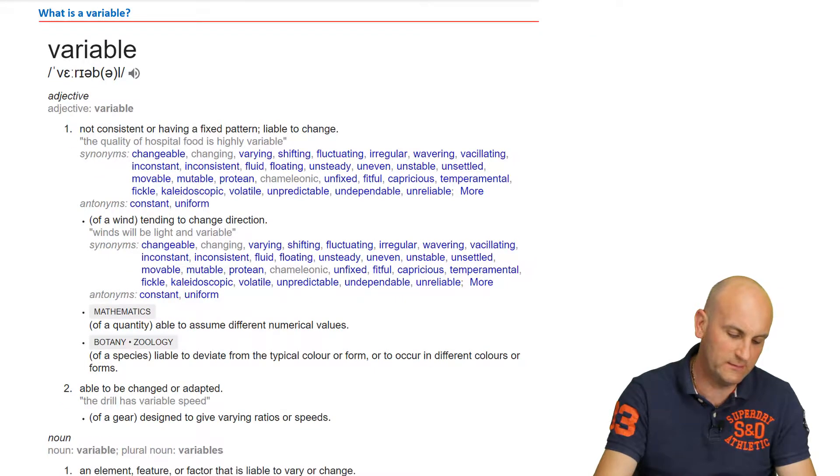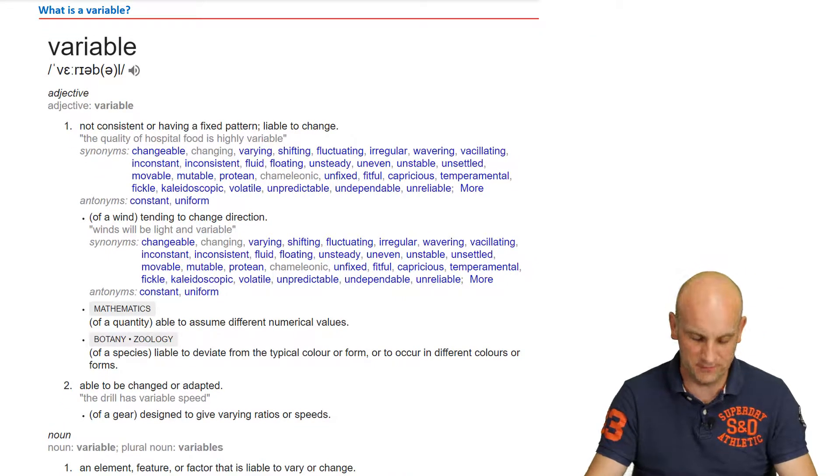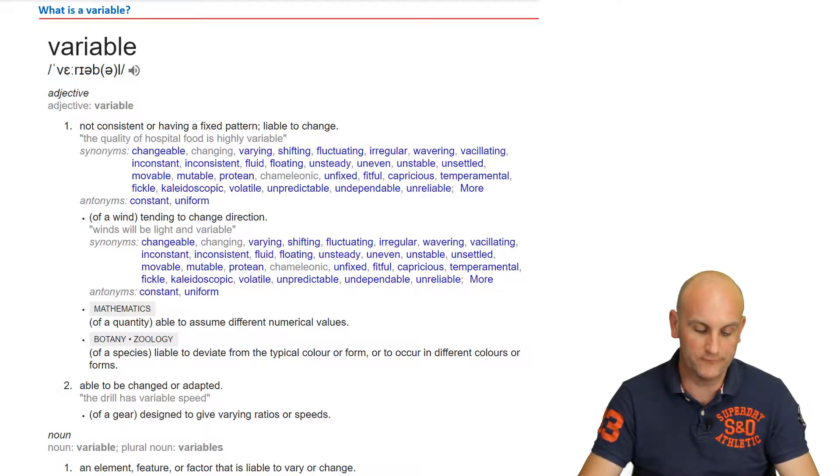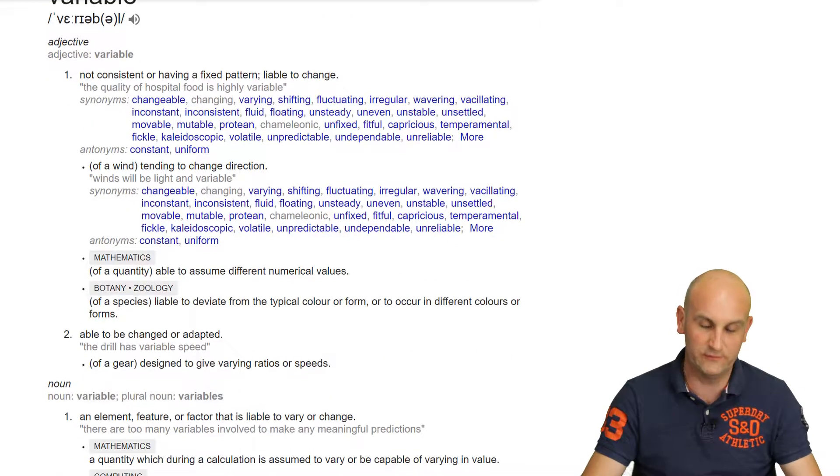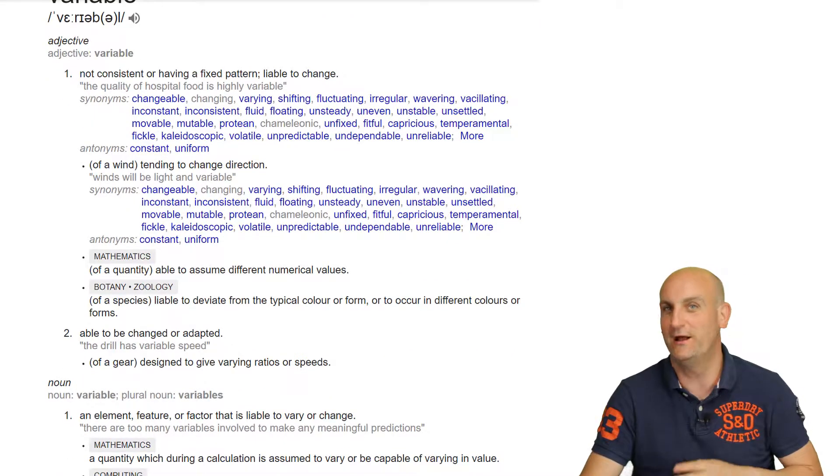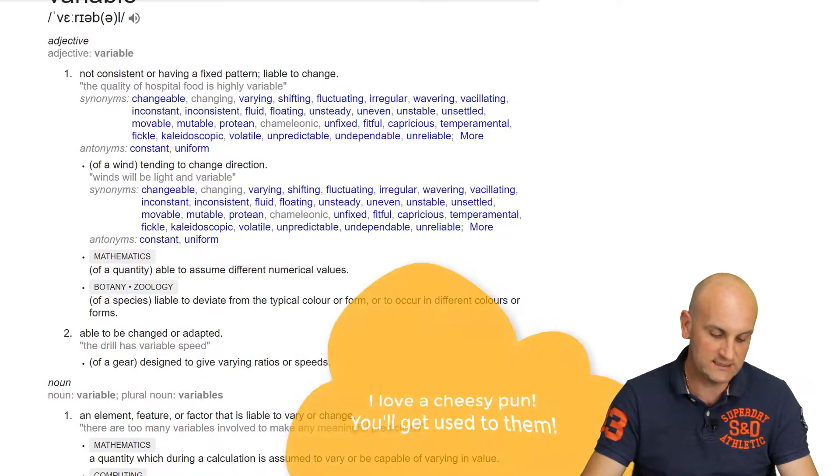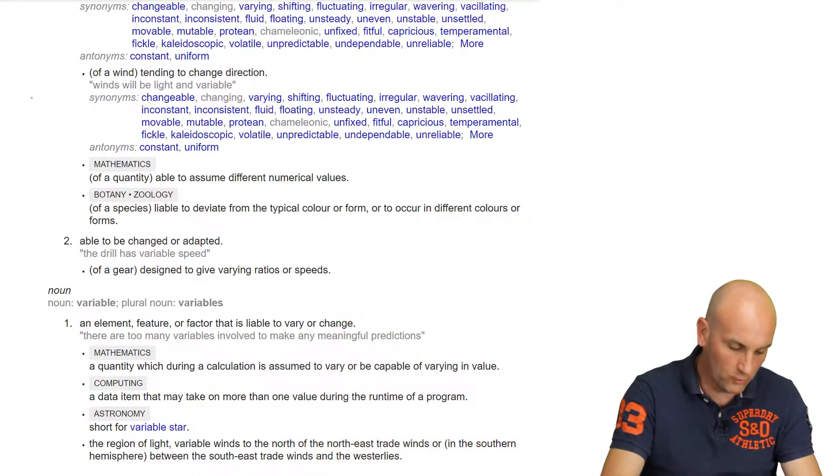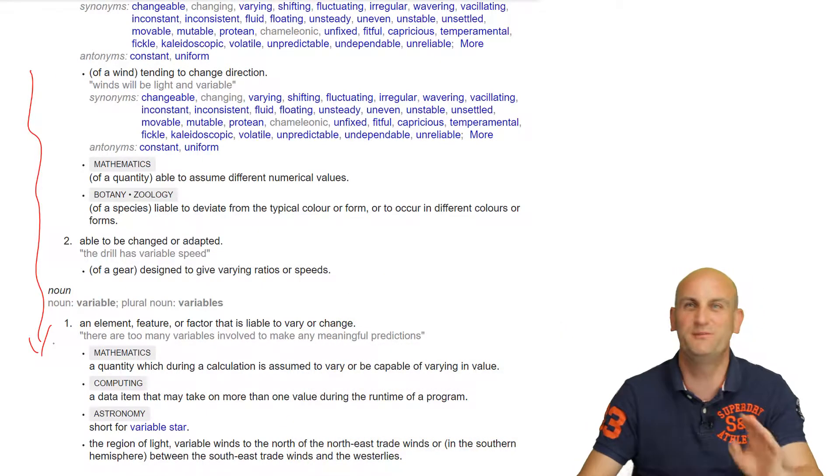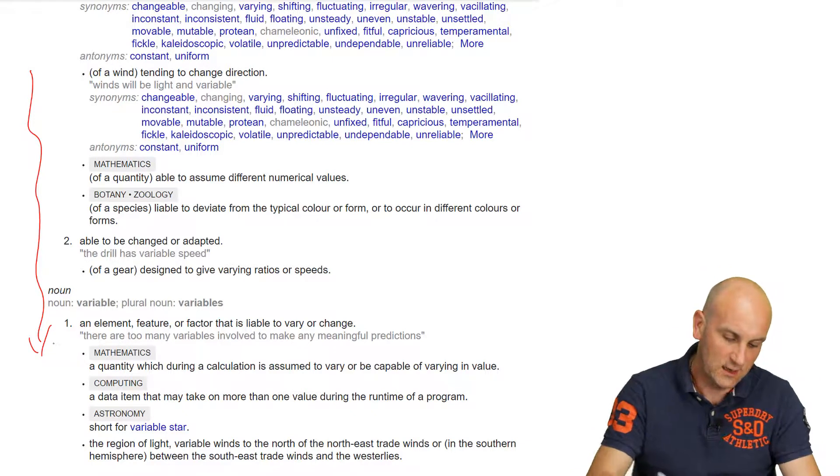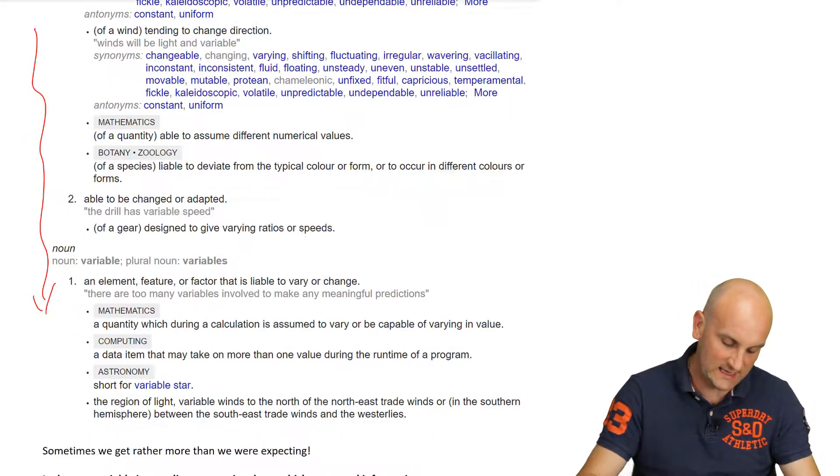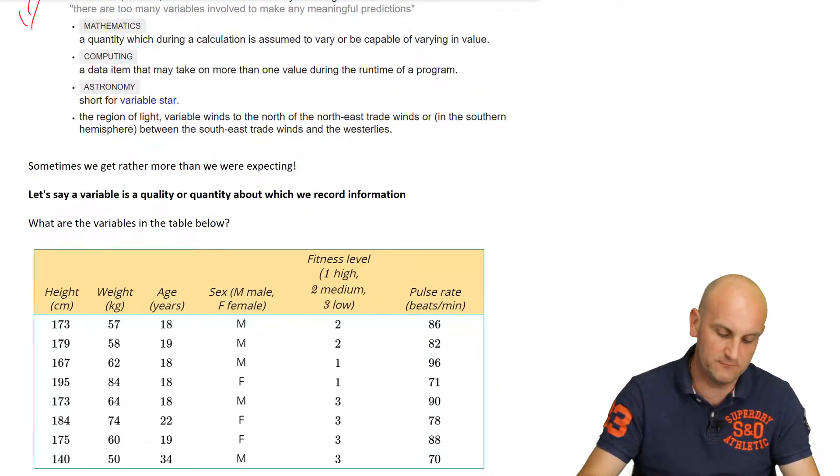And then we're going to move on to what is a variable. Oh, again, don't you just love a good definition? The problem is when I put this into dictionary, or in fact Google, it came up with a lot of stuff. Not consistent or not having a fixed pattern, not able to change, of wind. Oh, excuse me. I didn't think you could smell it from there. Tending to change directions. Mathematics. Oh, there we go. After all of this stuff, this is why people don't use dictionaries. Way too much stuff. Mathematics: able to assume different mathematical values.